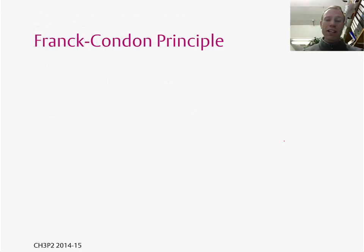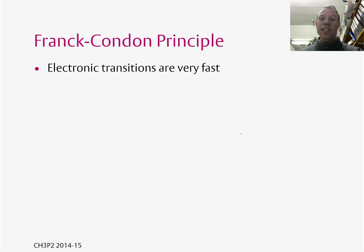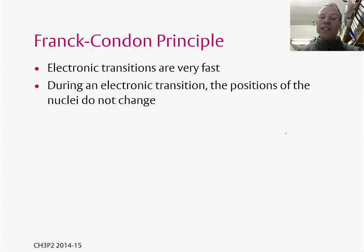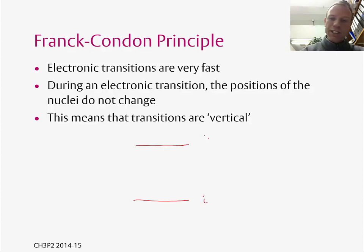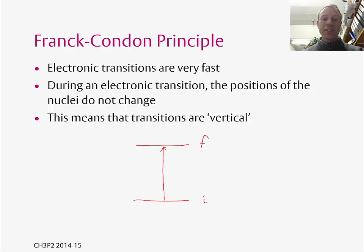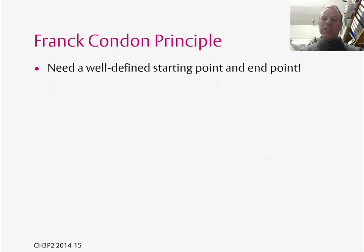The next thing we need to think about is the so-called Franck-Condon principle. Basically this says that electronic transitions are very fast, because an electron is moving from one place to another and electrons are light so they move fast. So effectively during an electronic transition the positions of the nuclei aren't going to change. That means transitions, if we draw them on an energy level diagram, are vertical — we draw an initial state i, a final state f, and represent the transition between these two states as a vertical line.